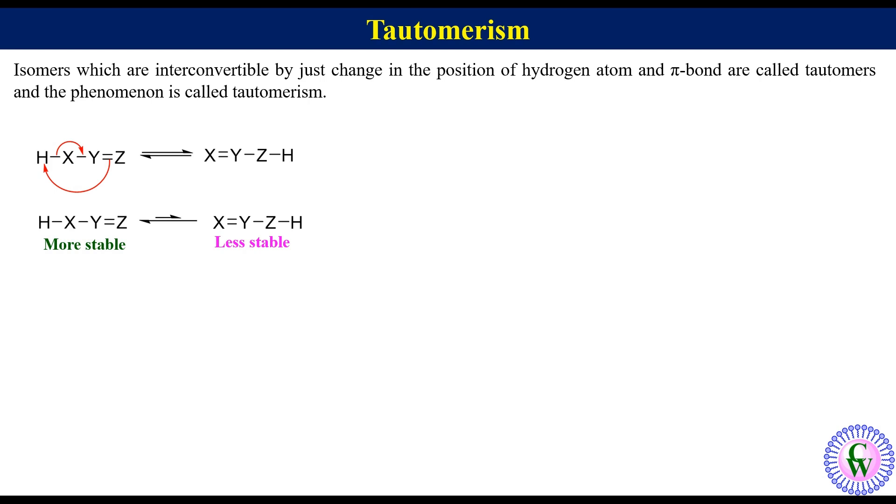If the right side tautomer is more stable than the left then the equilibrium arrow will be like this where the arrow in the right side direction is longer than the arrow in the left side direction. Now let's go through examples.